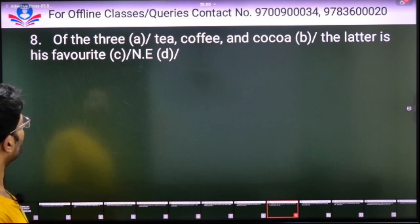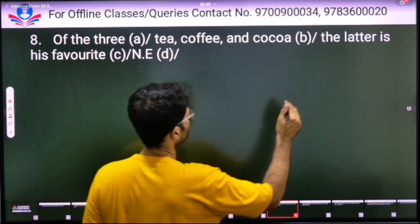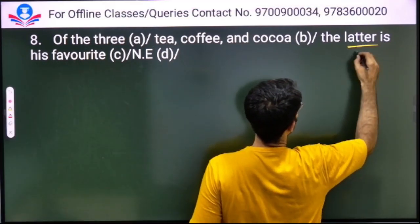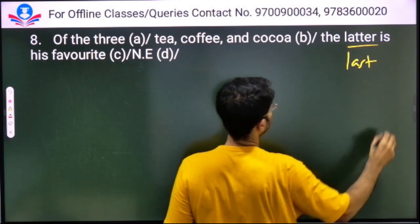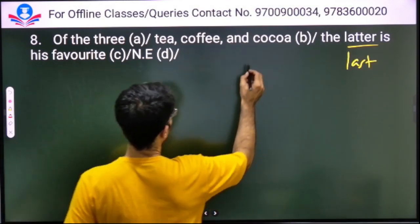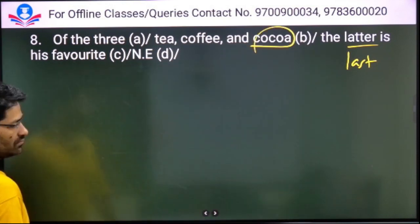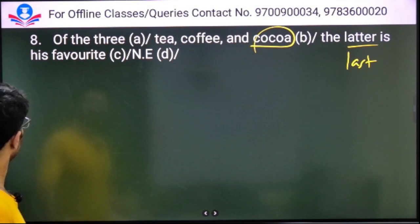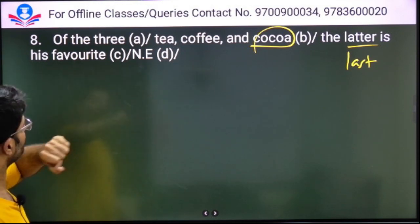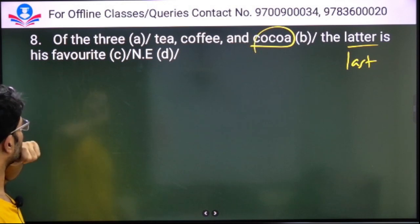Of the three - tea, coffee, and cocoa - the latter is his favorite. With three items, not 'latter' but 'last'. 'Latter' is for two items only.